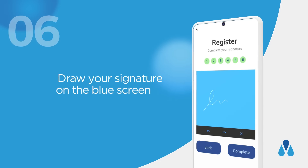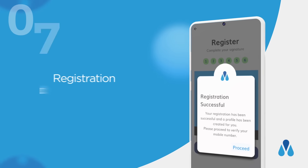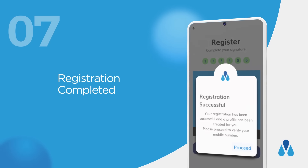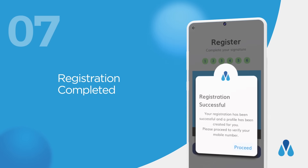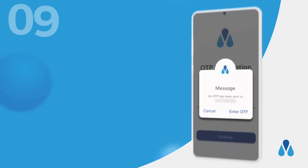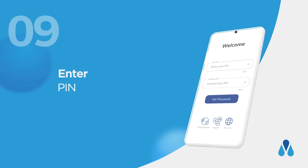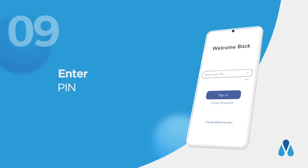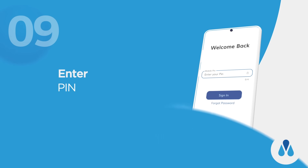Draw your signature on the blue screen. Once your registration has been approved, press Proceed. You will receive a one-time password (OTP) that will be auto-verified. Enter your PIN and press Set Password. You will use the PIN each time you log in.